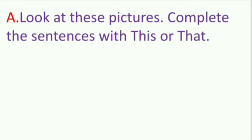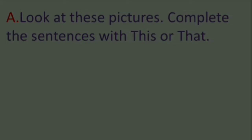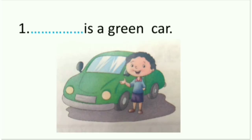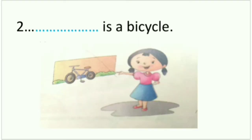Exercise A: Look at the pictures and complete the sentences with 'this' or 'that.' The first one: dash is a green car. Children, can you see one boy standing nearby the car — the thing that is nearby we write T-H-I-S, 'this'. The second one: dash is a bicycle. The girl is standing far away from the bicycle, so we write T-H-A-T, 'that'.